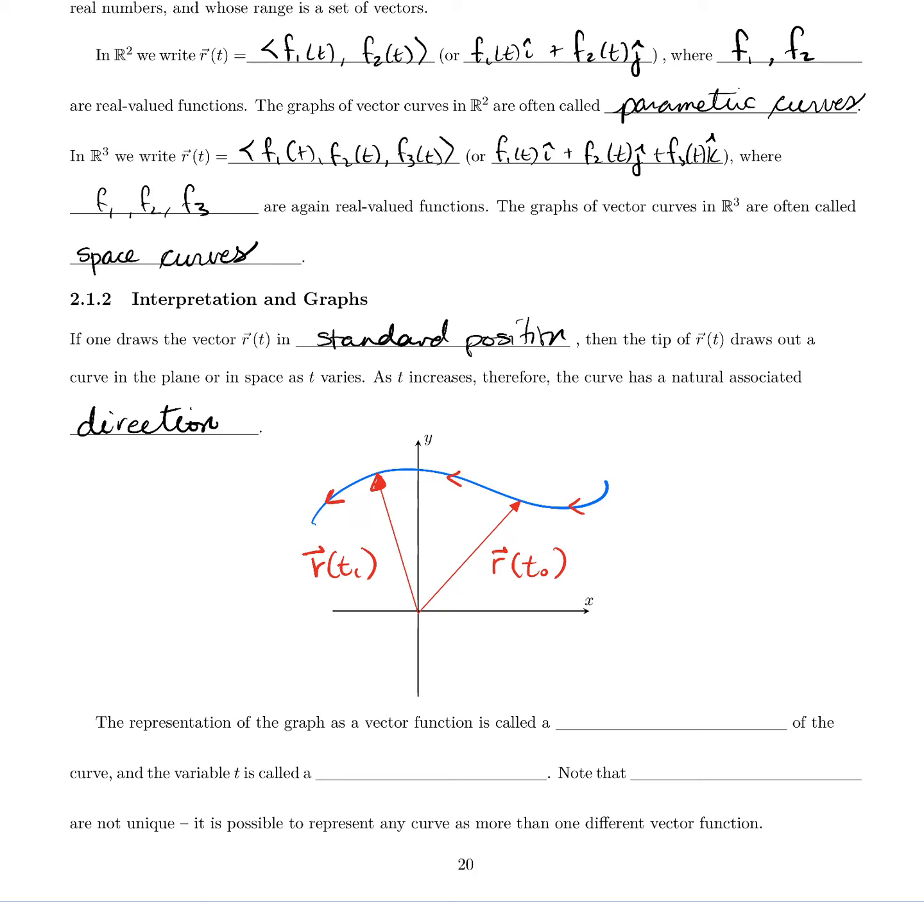So that means that the curve has a natural direction. As we go from t₀ to t₁, the radius vector draws out—it's like a little paintbrush dipped in blue paint drawing out a curve as it moves through the plane in this case, or space for the R³ kind of version.